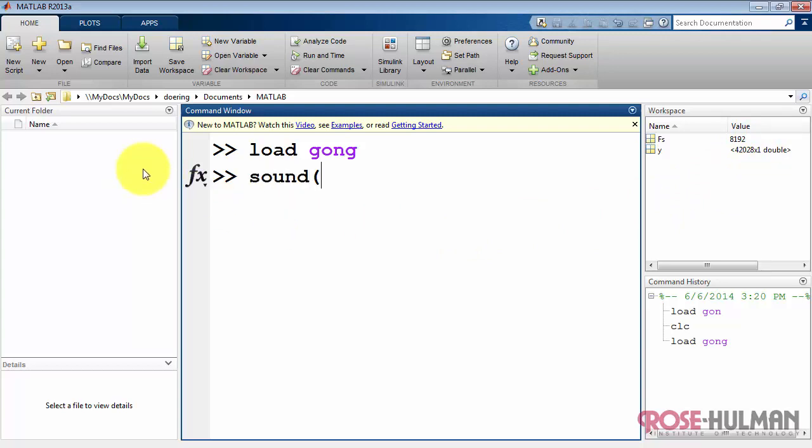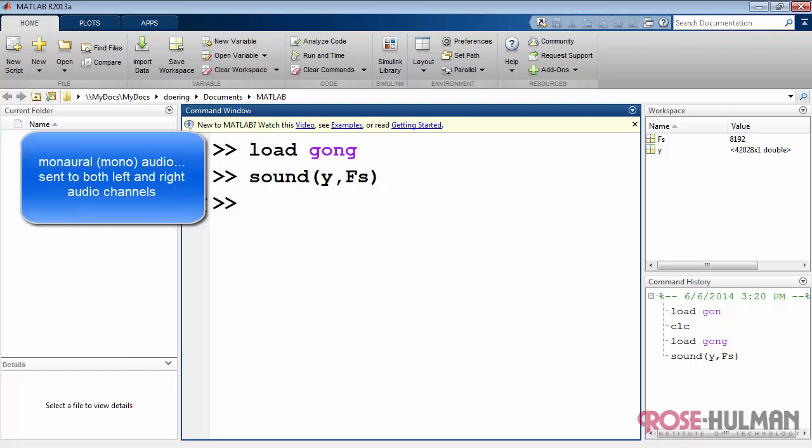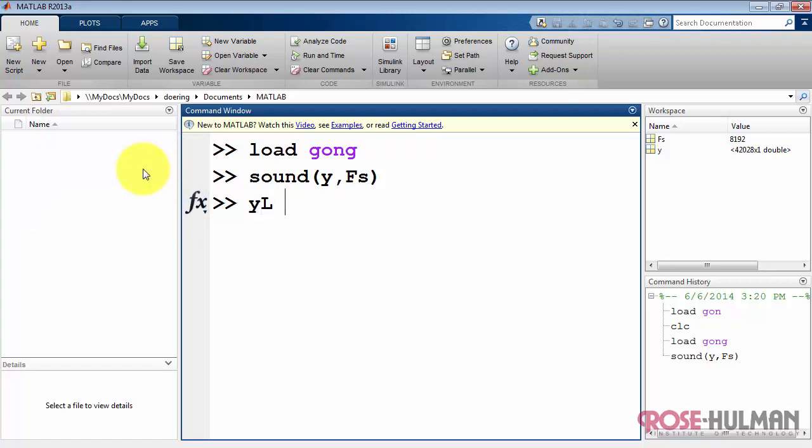Let's take a listen to this sound. Now this is a one channel or monaural audio sound and it's being sent to both left and right channels. If you're listening on headphones you should hear that the sound is essentially between your ears.